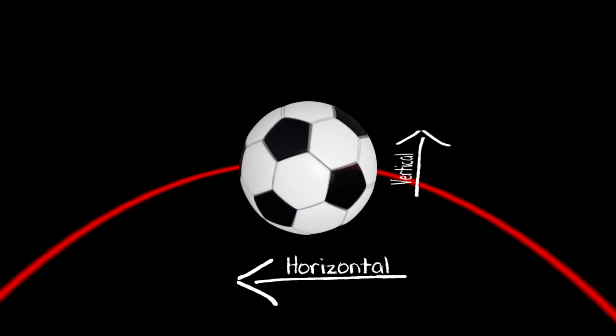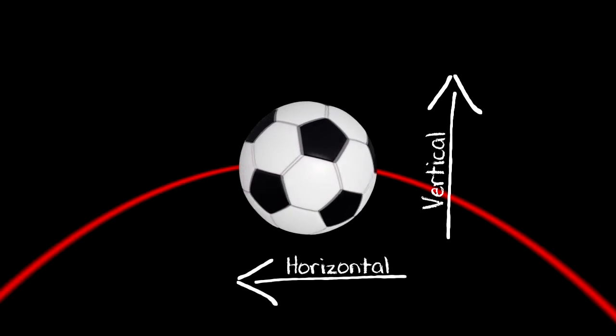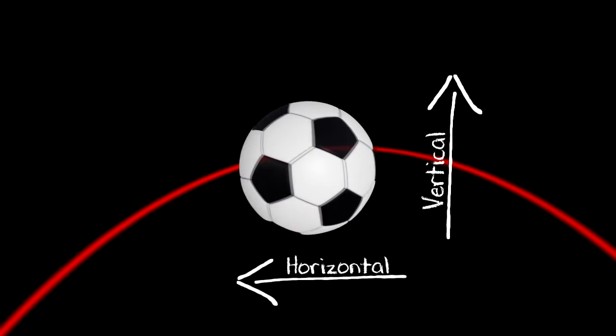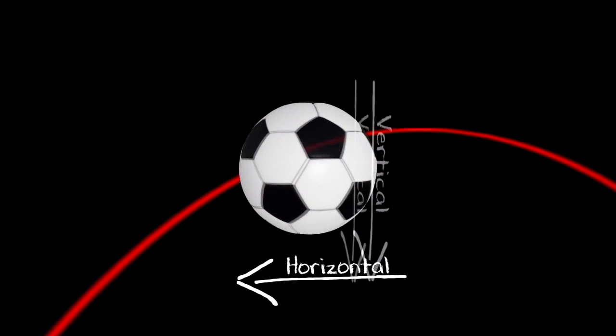After that, the vertical force increases again due to gravity pulling the ball down. Therefore, to perform the best shot, it is recommended for the ball to reach the goal at its vertex, where it will have the highest speed since there is only a slight amount of air resistance. This makes the ball harder for the goalkeeper to save.